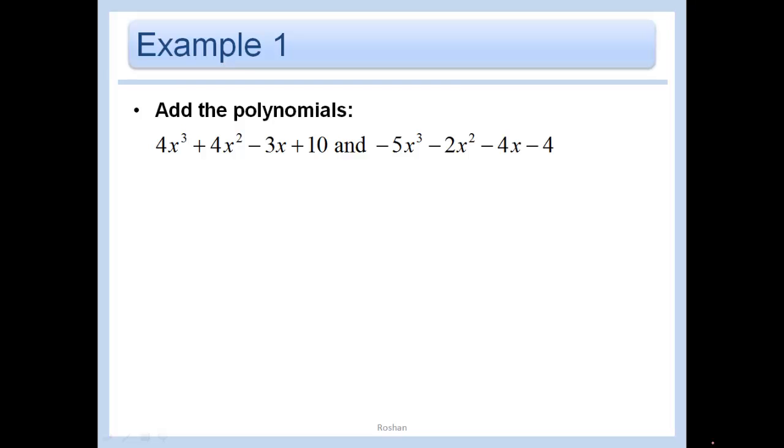So let's start off by just adding these polynomials. This is no different than anything you've done before. You add like terms, so here are my cubes, then I have my squared terms, then I have my x terms, and I have my constants.